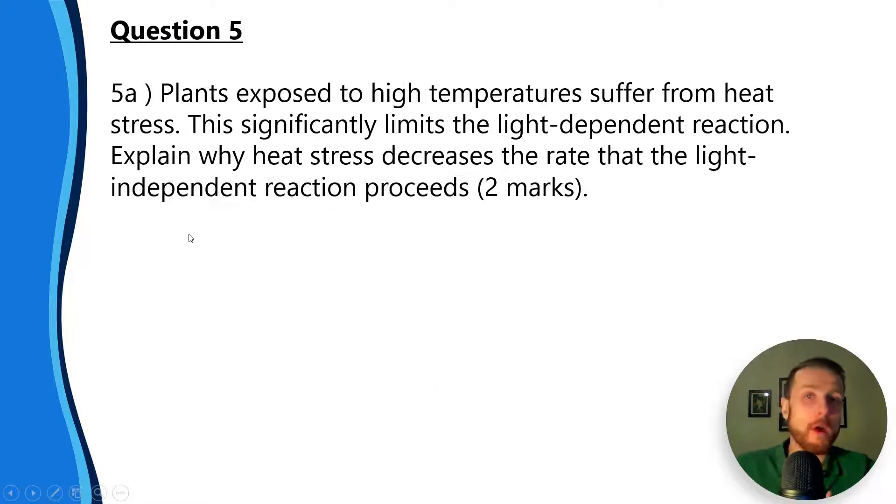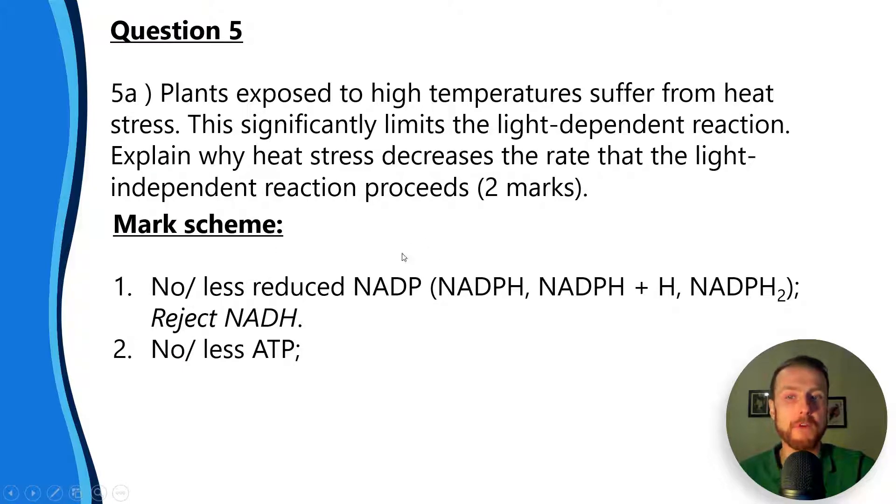Question five: plants exposed to high temperatures suffer from heat stress. This significantly limits the light dependent reaction. Explain why heat stress decreases the rate that the light independent reaction proceeds.